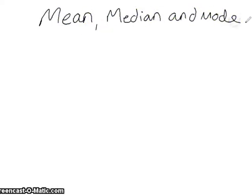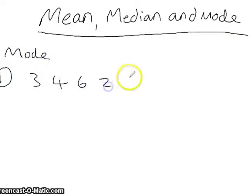Mean, median, and mode. Firstly, mode. In the first set of data, the mode is 8, as it appears twice.